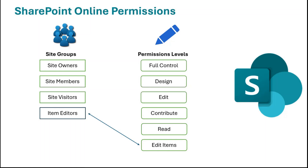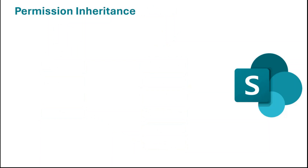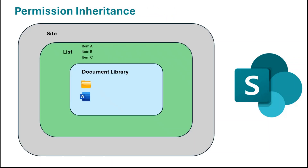Apart from groups and permission levels, there are many other things in SharePoint permissions to discuss, which we will cover in upcoming videos. But for now, let's talk about permission inheritance. By default, a SharePoint site, list, and document libraries inherit the same level of permissions that are assigned at the site level.